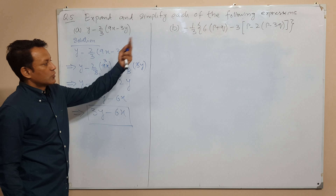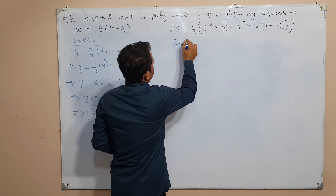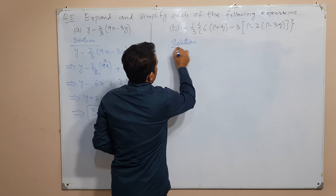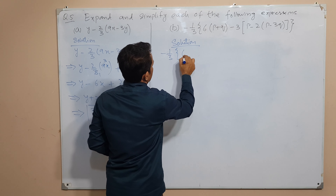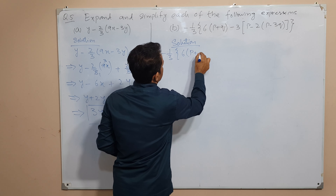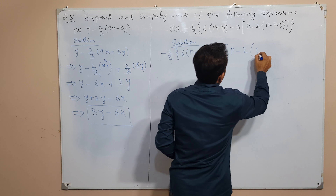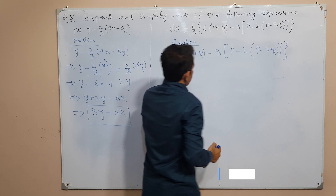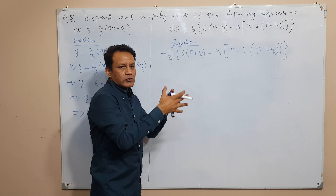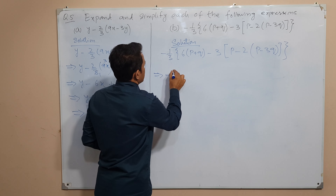Now let's move forward to solve our part B। इसका solution क्या होगा हमारे पास? पहले तो हम as it is इसको लिखेंगे: minus 1 upon 3, ये curly brackets से आ रहे हैं, 6 times p plus q, minus 3 times square bracket start, p minus 2 times p minus 3q। तो जब हमें brackets होते हैं expression के अंदर, तो हम सबसे पहले innermost brackets को solve करते हैं।